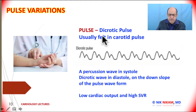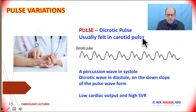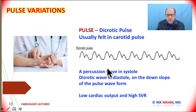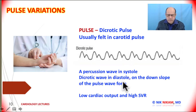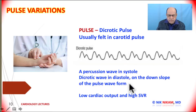The dicrotic notch represents aortic valve closure. Sometimes we see a prominent dicrotic pulse, best felt when palpating the carotid artery. A percussion wave is seen during systole; the dicrotic wave comes during diastole on the downslope of the arterial waveform. This may represent low cardiac output along with high systemic vascular resistance, as seen in patients with congestive heart failure.